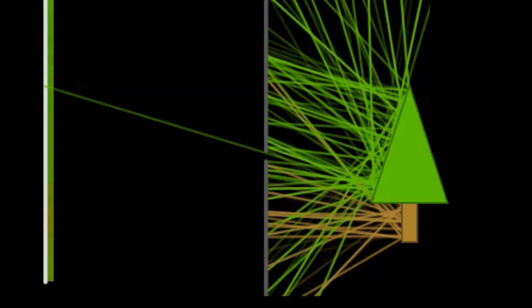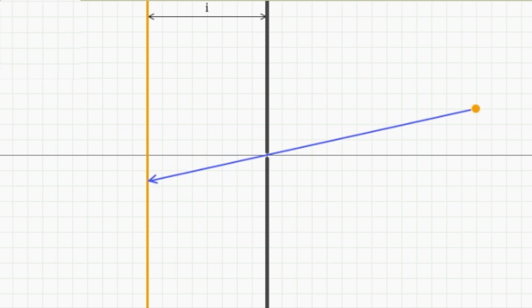As usual, when bridging the gap between geometry and algebra, we'll need to introduce a coordinate system. It's convenient to choose our coordinate system so that the pinhole is at the origin, right here. And let's imagine that our scene is off to the right. Suppose the image plane inside our camera is at some distance to the left of the pinhole. Let's call this distance I.